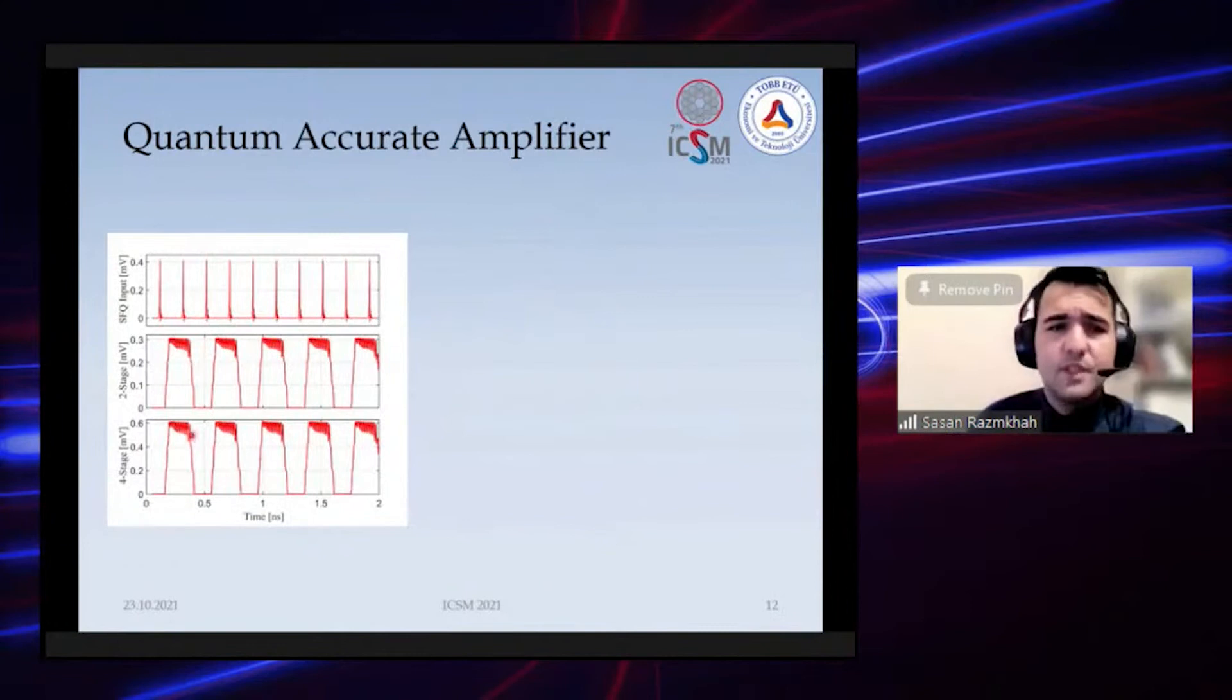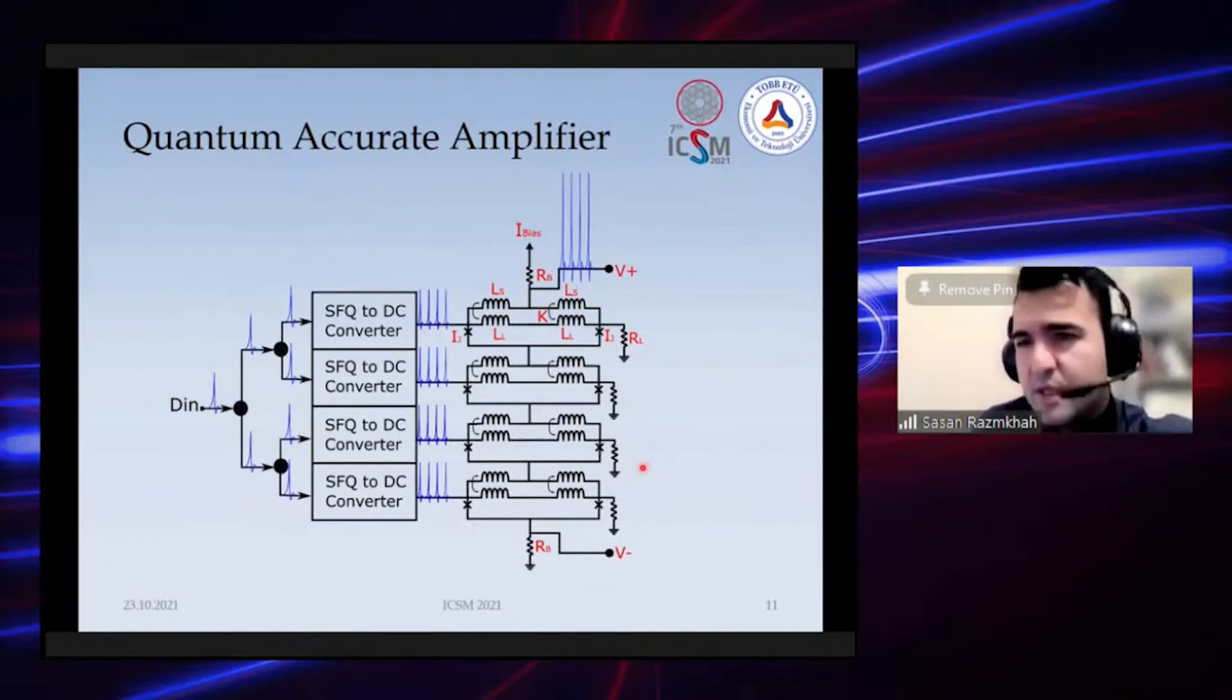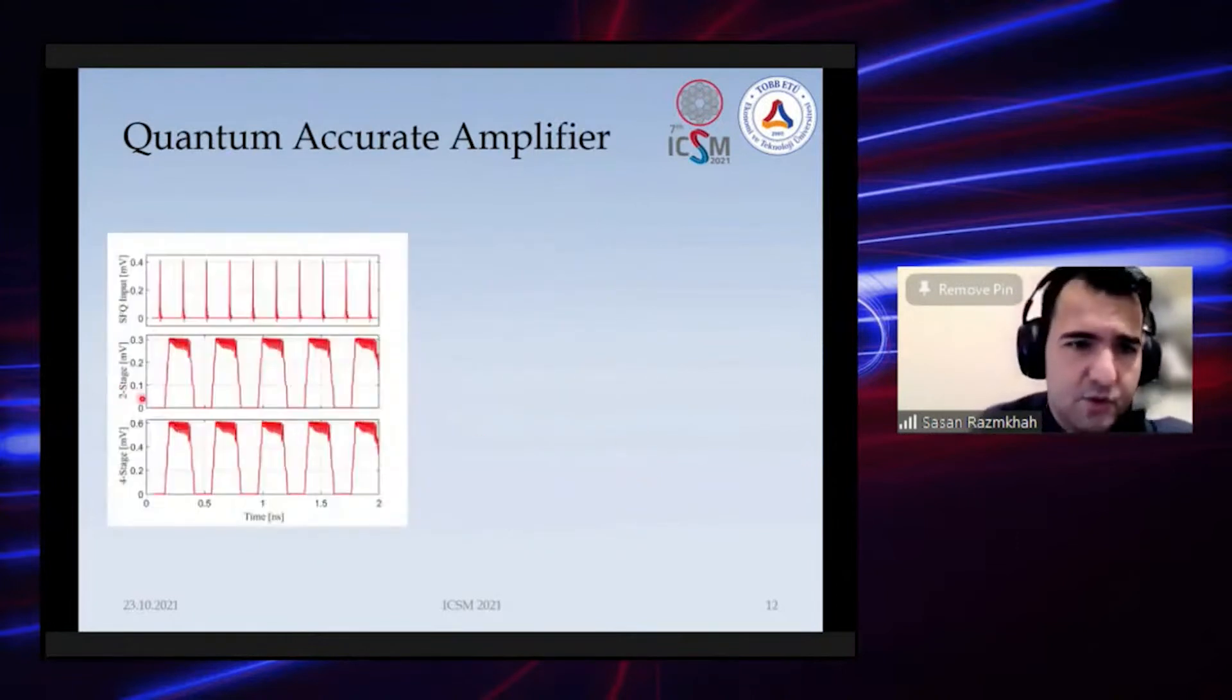This is the quantum accurate amplifier simulation results. As you can see, the number of stages means the number of SQUIDs we put. When you put more SQUIDs you need more space in the circuit and more bias, but you also get higher gain.